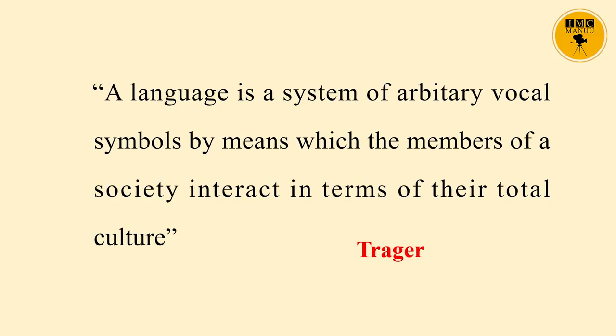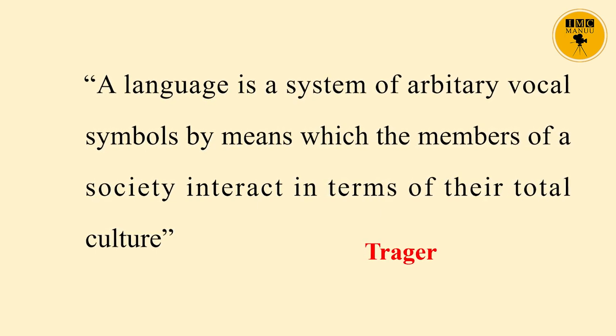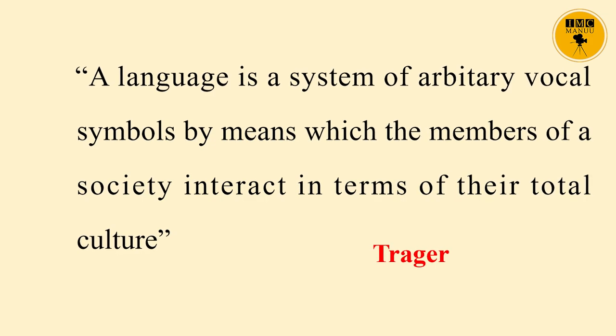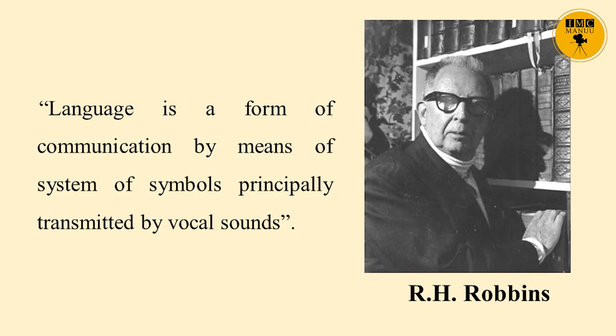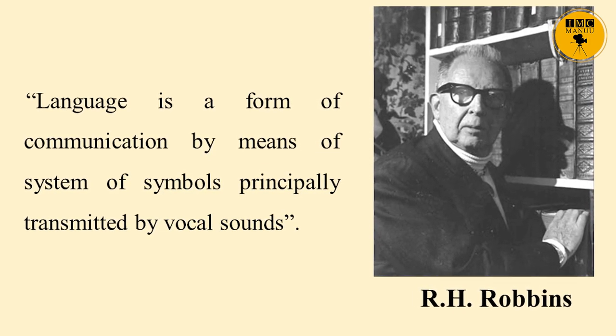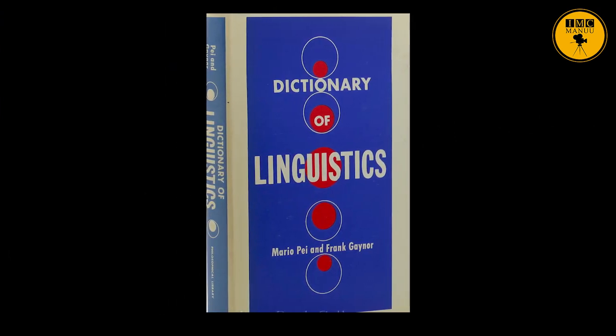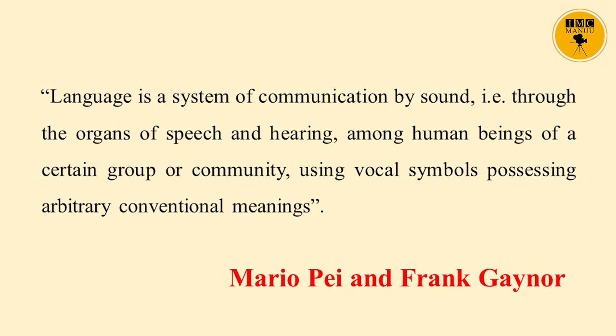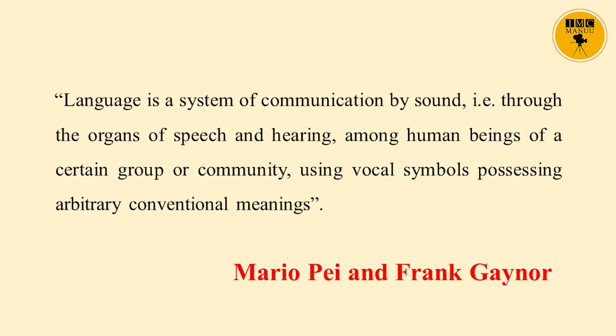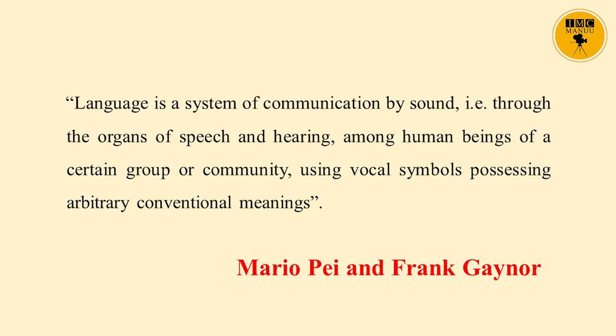Dragor said: A language is a system of arbitrary vocal symbols by means of which the members of a society interact in terms of their total culture. Another famous linguist, R.H. Robbins, describes language as a form of communication by means of a system of symbols, principally transmitted by vocal sounds. Fromkin and Rodman, in 1974, defined language as the system by which sounds and meanings are related. Mario Pei and Frank Gaynor, in 1954, in their famous book Dictionary of Linguistics, defined language as a system of communication by sound — through the organs of speech and hearing — among human beings of a certain group or community, using vocal symbols.